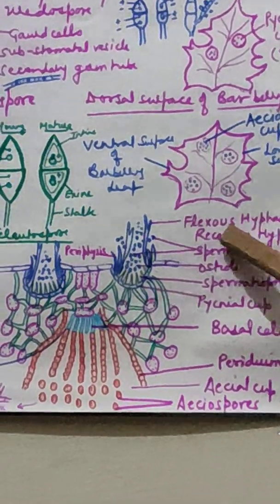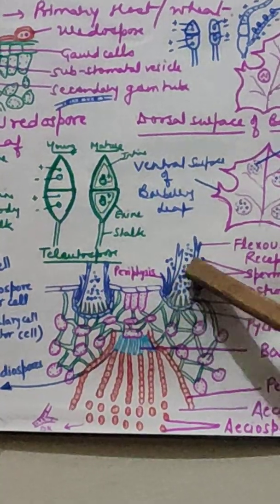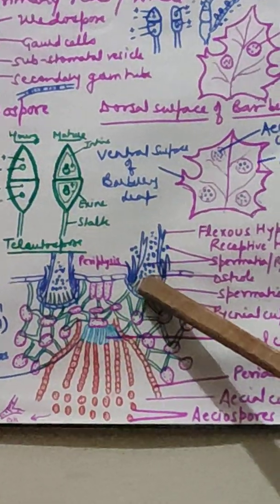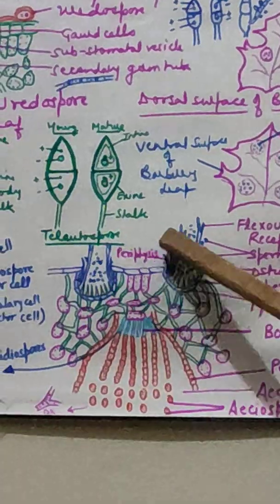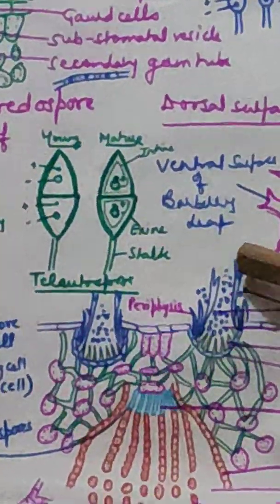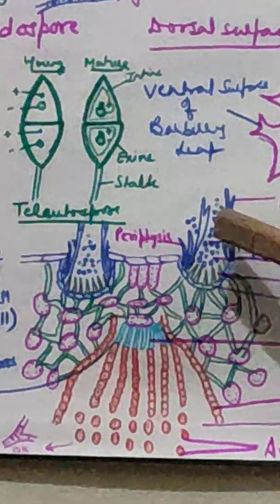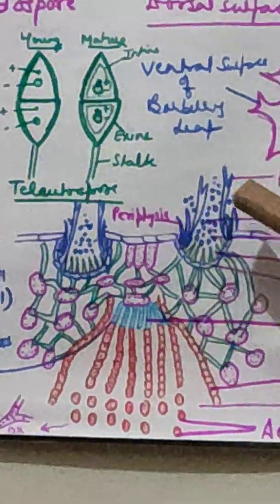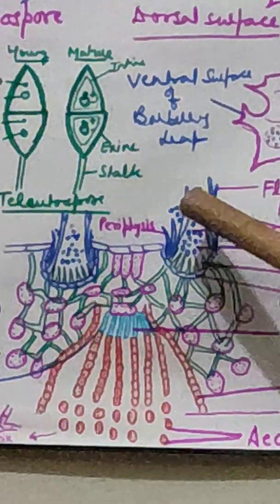Inside the pycnidium, spermatophores are formed from the lower portion, which give rise to spermatia or pycniospores. Additionally, several flexuous hyphae (receptive hyphae) are formed growing upward from the base. When an insect visits this pycnidium, the spermatia stick to the insect's legs. When the insect visits another pycnidium formed by germination of a basidiospore of the opposite strain, fertilization of the flexuous hyphae occurs. The spermatium reaches the tip of the flexuous hypha, the cell wall dissolves, and the nucleus of the spermatium migrates into the flexuous hypha, converting monokaryotic mycelium into dikaryotic mycelium — this is the dikariotization act.